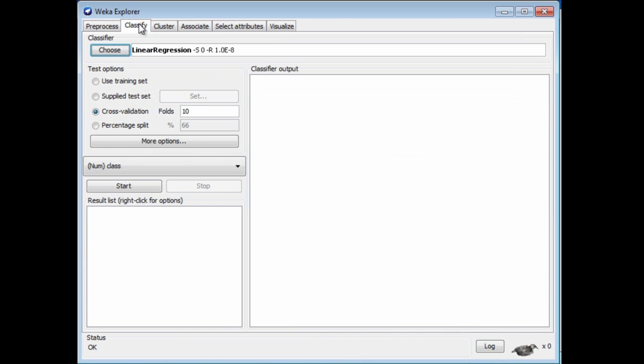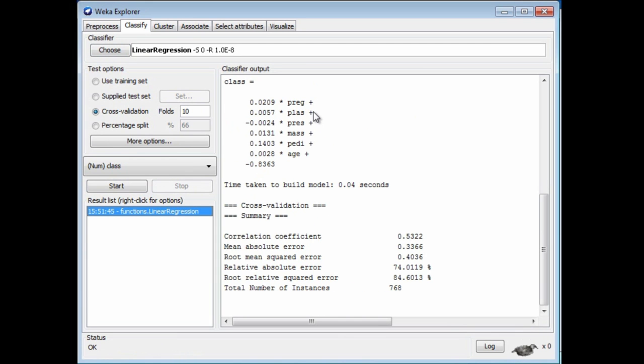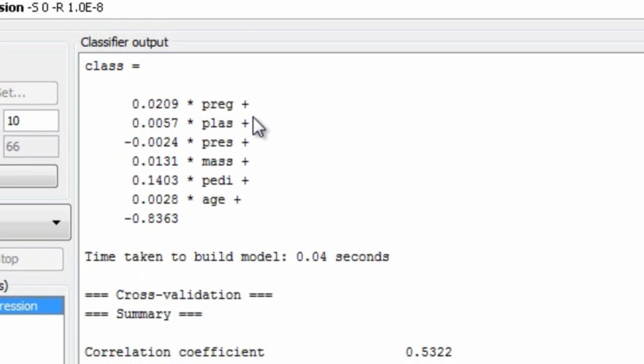Now we've got our linear regression. We can just run it. This is the regression line. It's a line, 0.02 times the pregnancy attribute, plus this times the class attribute, and so on, plus this times the age attribute, plus this number.